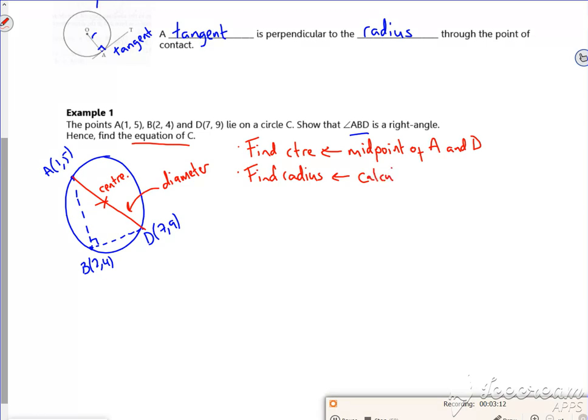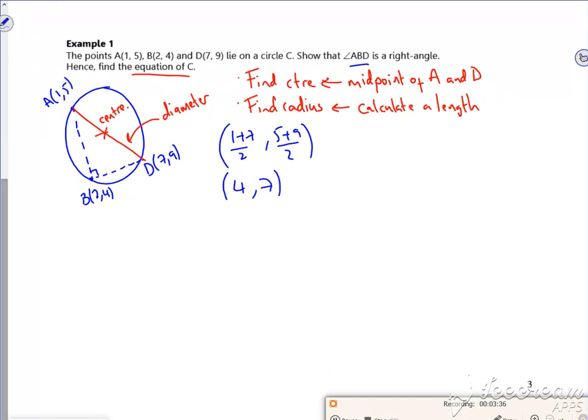So I'll calculate a length. You could do the length of A to D and then half it. Right, so very quickly, let's work out the midpoint. The midpoint is 1 plus 7 over 2, 5 plus 9 over 2. So that's going to be 4 comma 7. So I've got the centre. So if I do the radius, it's going from A(1,5) through to, let's call it C(4,7). The change going across is 3, the change going up or down is 2. So that's going to be another root 13.